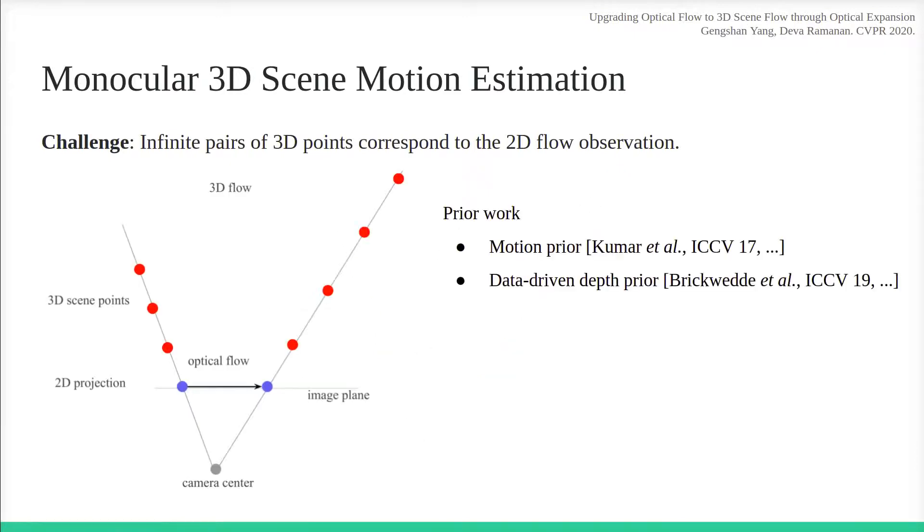Previous methods rely on strong prior assumptions, either in the form of rigid body motion prior or learned monocular depths. Instead, we derive a simple geometric relationship that allows us to recover up-to-scale 3D motion from 2D flow.